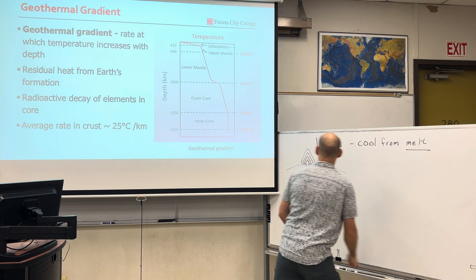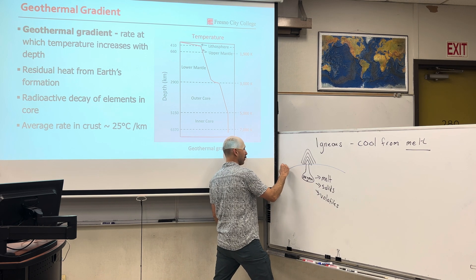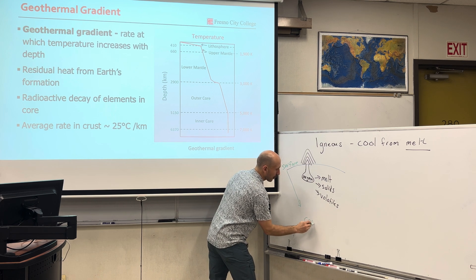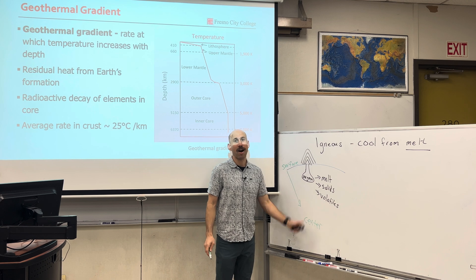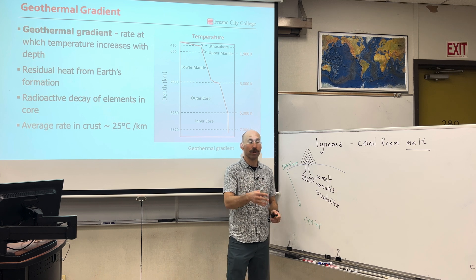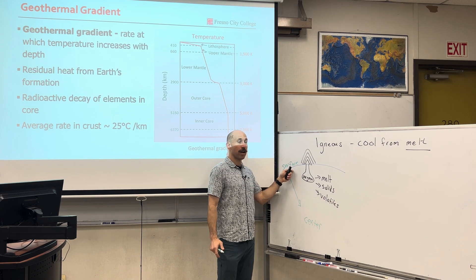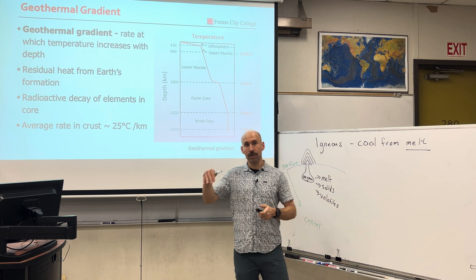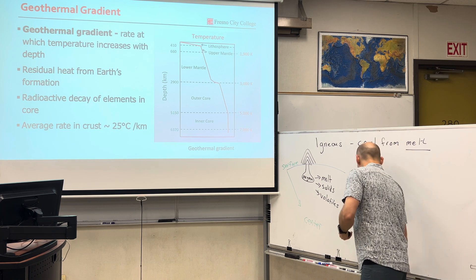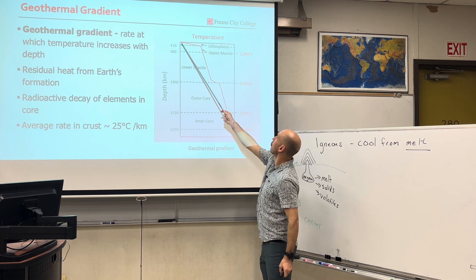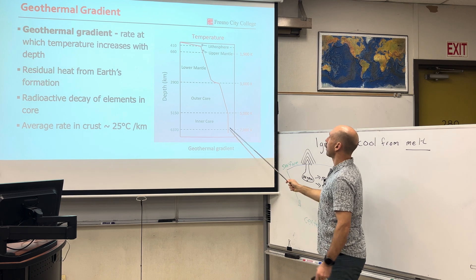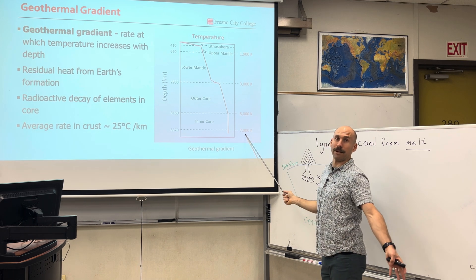An important thing to know is that from the surface down to the center of the earth, it gets hotter — a lot hotter. It's called the geothermal gradient. Geo: earth. Thermal: heat. Gradient: a variation. In earth's crust, about every kilometer you go into earth's interior, it's about 25 degrees Celsius. You can actually map out the temperature versus depth from the surface all the way down to the core — this is in Kelvin, and it gets up to about 7,000 degrees Kelvin.